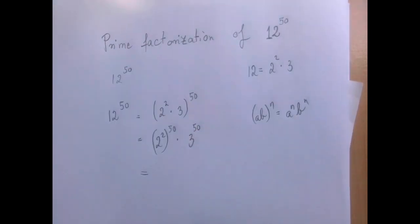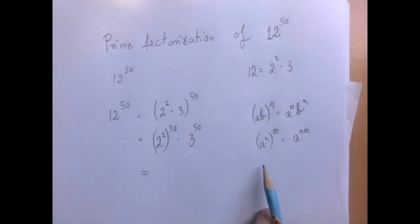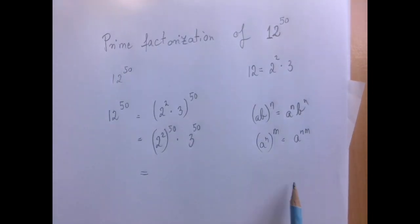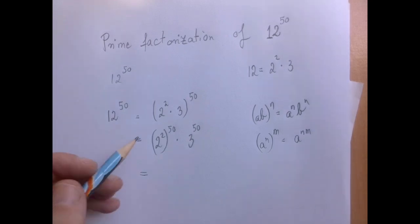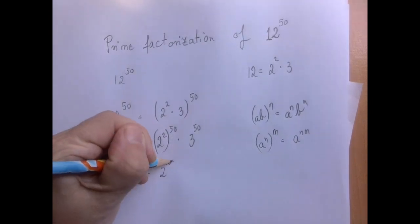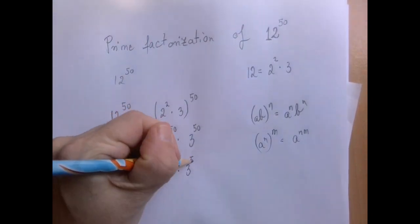We're almost there. Now we're going to simplify this expression using the rule that says if we're exponentiating an exponential expression, we can just multiply the exponents. So that means we're talking about 2 to the 100th power times 3 to the 50th power.